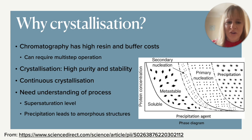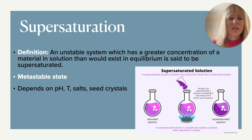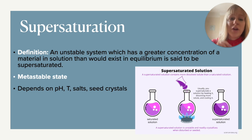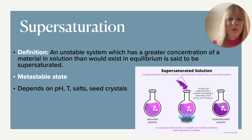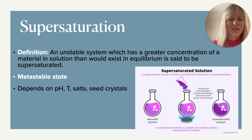To understand what supersaturation is and where we need to be in that metastable to primary and secondary nucleation range, I looked at the IUPAC definition of supersaturation in chemistry. It is an unstable system which has a greater concentration of a material in solution than would exist at equilibrium — this is said to be supersaturated. Actually there are quite a few examples in nature where supersaturation occurs, even though it's metastable.